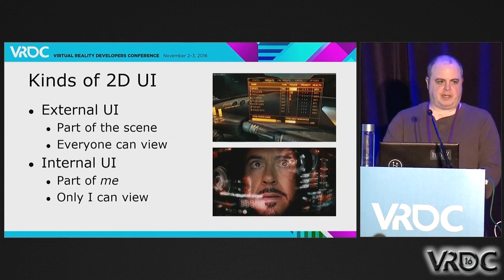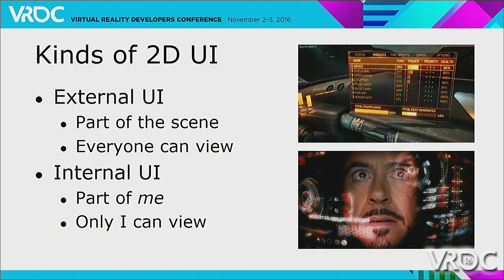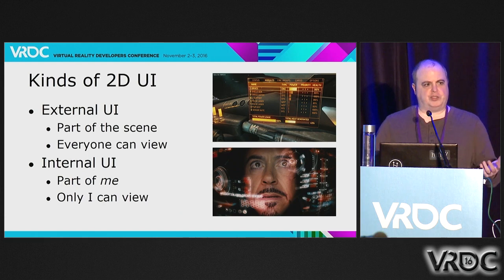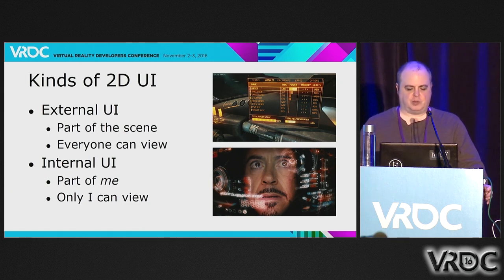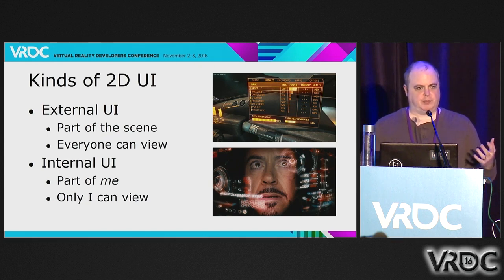I also want to divide up the kinds of UI in terms of internal and external. External UI is something that's part of the scene — a screen on an ATM in an in-world object is external UI. Whereas something like a browser window is internal UI; it's private to you. In a multi-user or social VR experience, external UI is visible to everyone, internal UI is visible only to you. Most of the interesting problems I think have to do with internal UI presenting the customizability interface to a user.